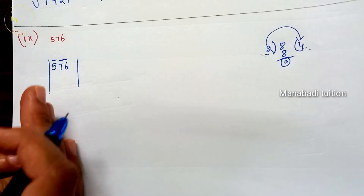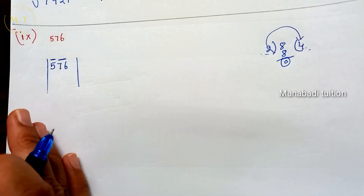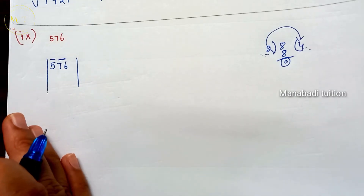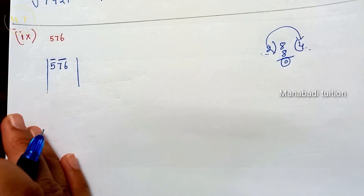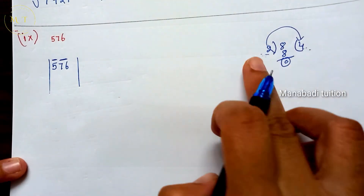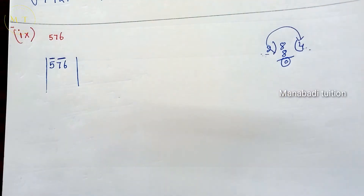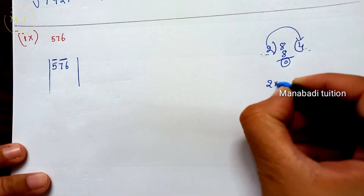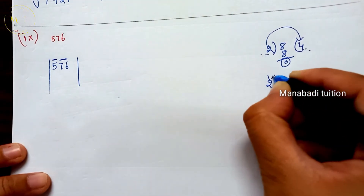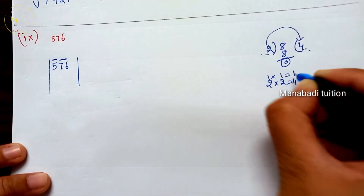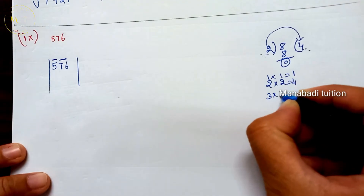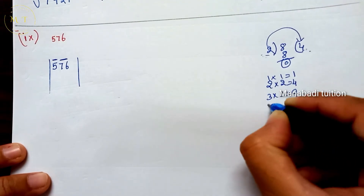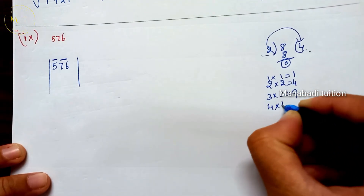Here we find out the square root through the division method. In this division method, you multiply: the number 4 is the same. 2×2 is 4, 1×1 is 1, 2×2 is 4, 3×3 is 9, 4×4 is 16. So this is the reference table.